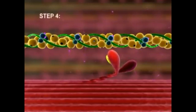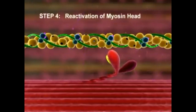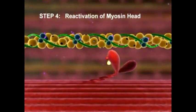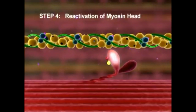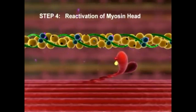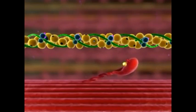Step 4: Reactivation of the myosin head. ATP is hydrolyzed to ADP and inorganic phosphate. The energy released reactivates the myosin head, bringing it back to its cocked position.